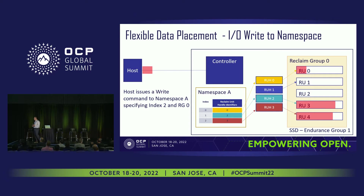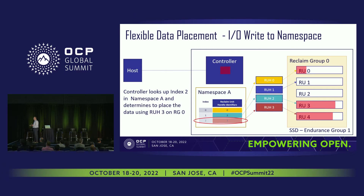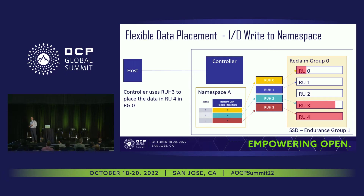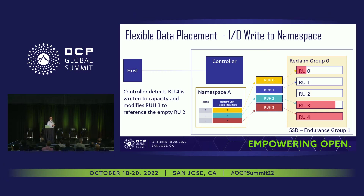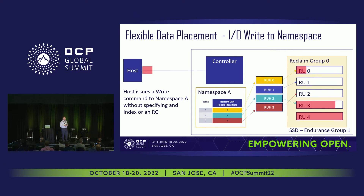In another scenario: same namespace, index 2, same reclaim group. We look up index 2, it goes to RUH3, and writes it there — ending up in RU4, another placement in a different reclaim unit. In this case, we filled the RU to capacity. When that happens, the controller automatically swaps out the RU to a different one, now pointing to RU2 which is empty. That's automatic by the controller. The host can keep writing to a particular RUH or localized index, and the automation of moving from one reclaim unit to the next happens automatically.